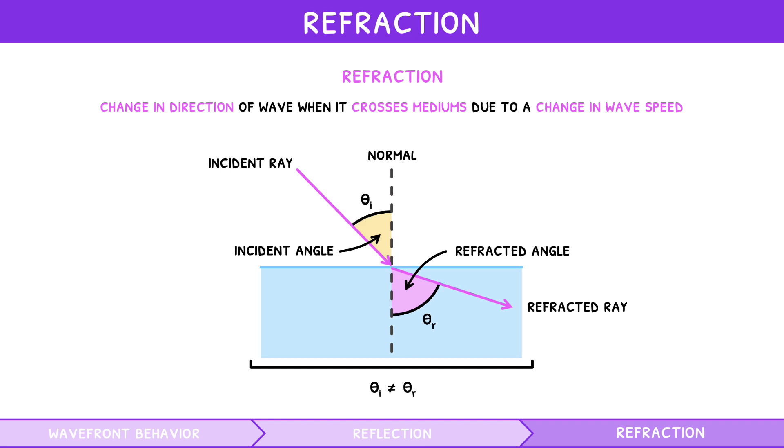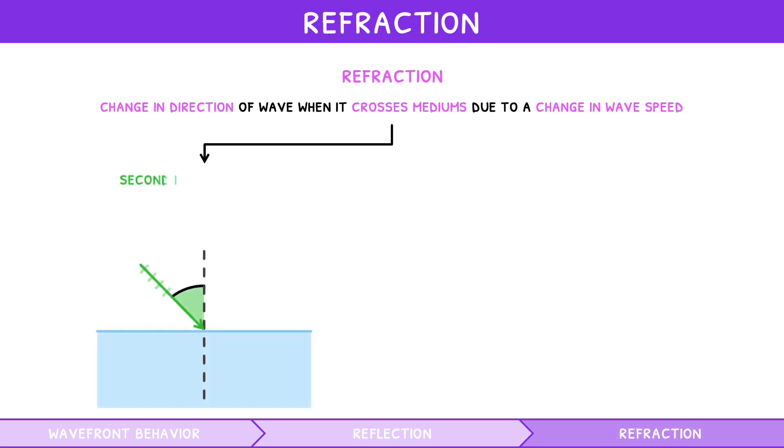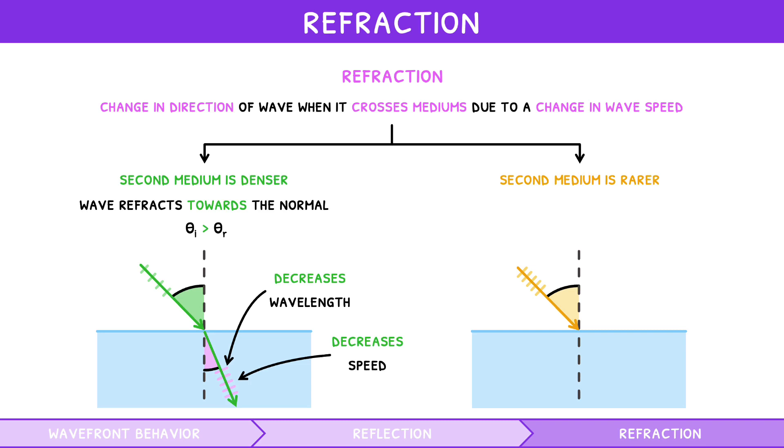How the incident ray refracts primarily depends on the optical or acoustic density of the second medium. If the second medium is denser than the first medium, the wave refracts towards the normal. Thus, the incident angle is greater than the refracted angle. A simple explanation for this is that the denser medium decreases the wavelength, thus bending the wave inward and decreasing its speed. If the second medium is less dense, or rarer than the first medium, the wave refracts away from the normal. Thus, the incident angle is less than the refracted angle. A simple explanation for this is that the rarer medium increases the wavelength, thus bending the wave outward and increasing its speed.